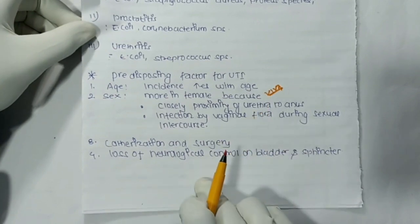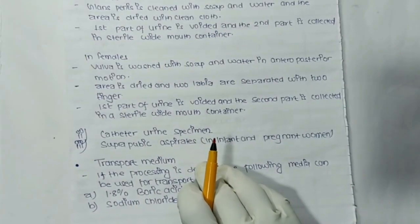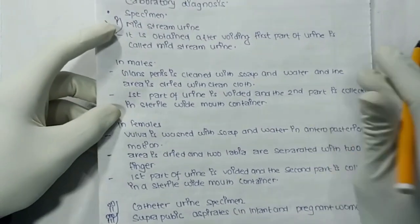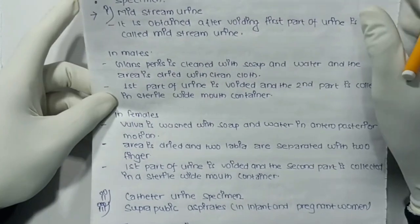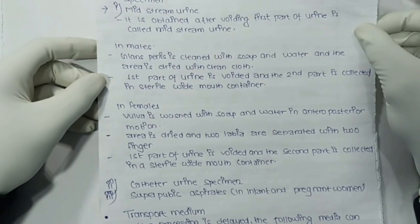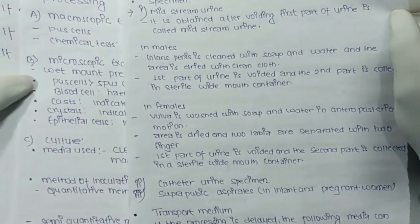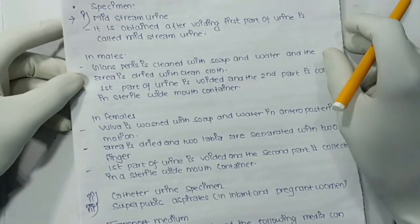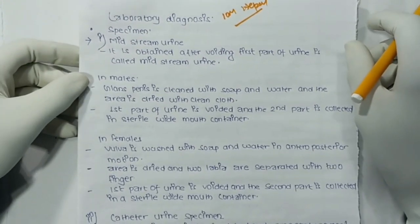We have completed the predisposing factors of UTI. Now, laboratory diagnosis — this is an important question for IOM in Nepal. Laboratory diagnosis includes specimen collection, transport medium, and processing, which we will discuss one by one.